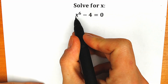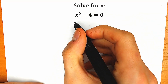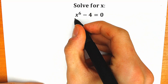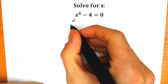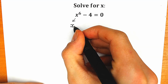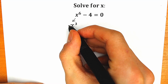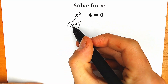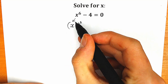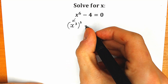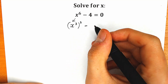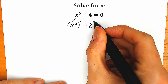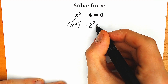First of all, I'm going to express it as a difference of squares. So instead of x to the sixth power, I'm going to write x to the third power, squared — this is absolutely the same thing. And instead of 4, we can easily write it as 2 squared, equal to 0.